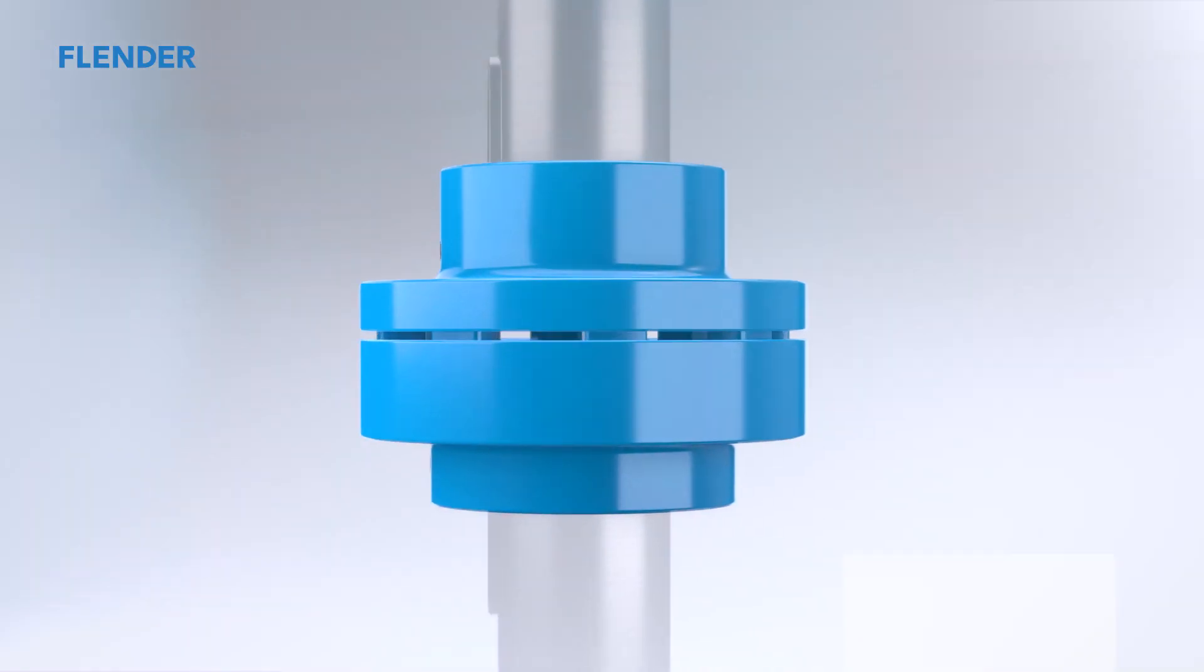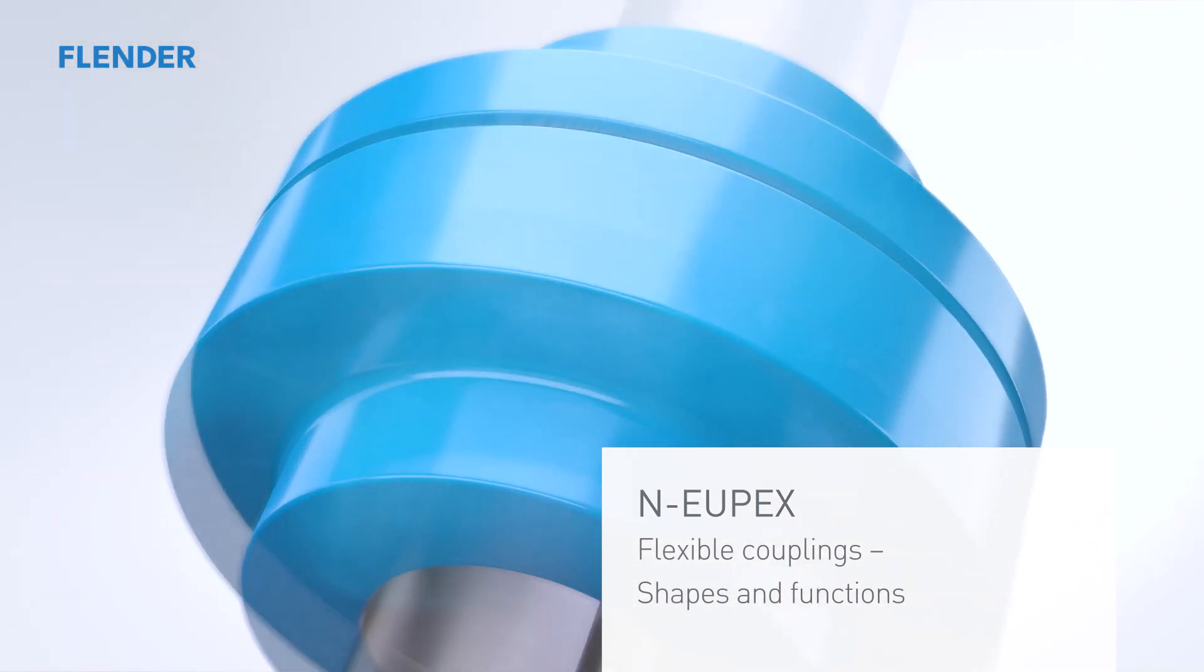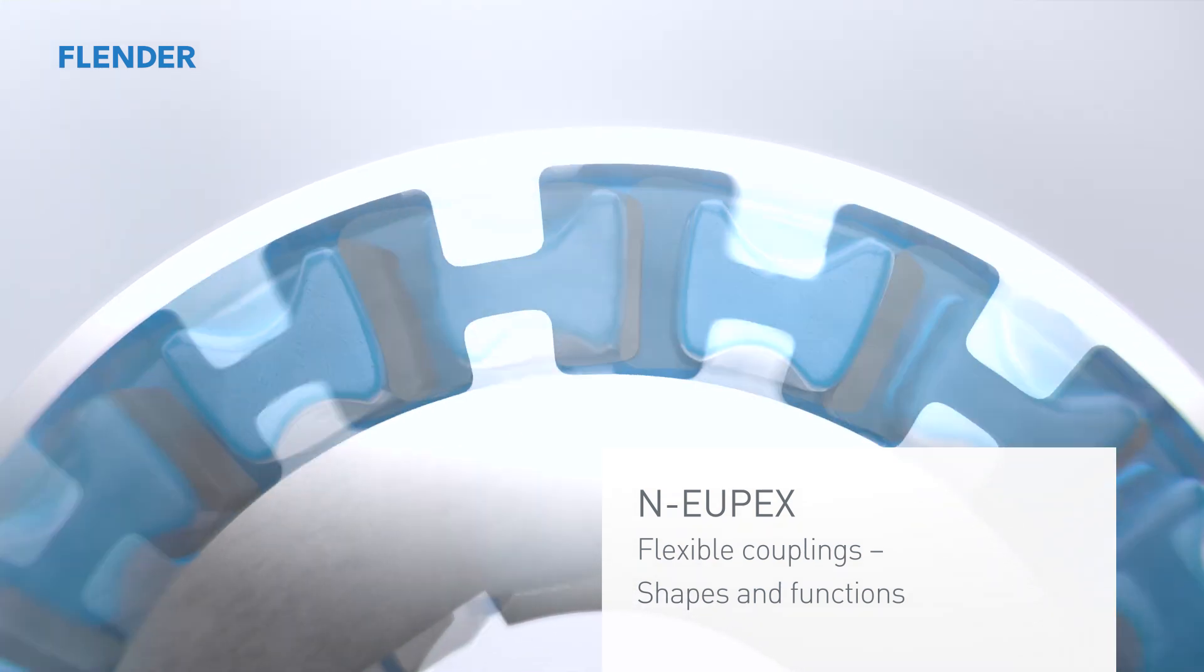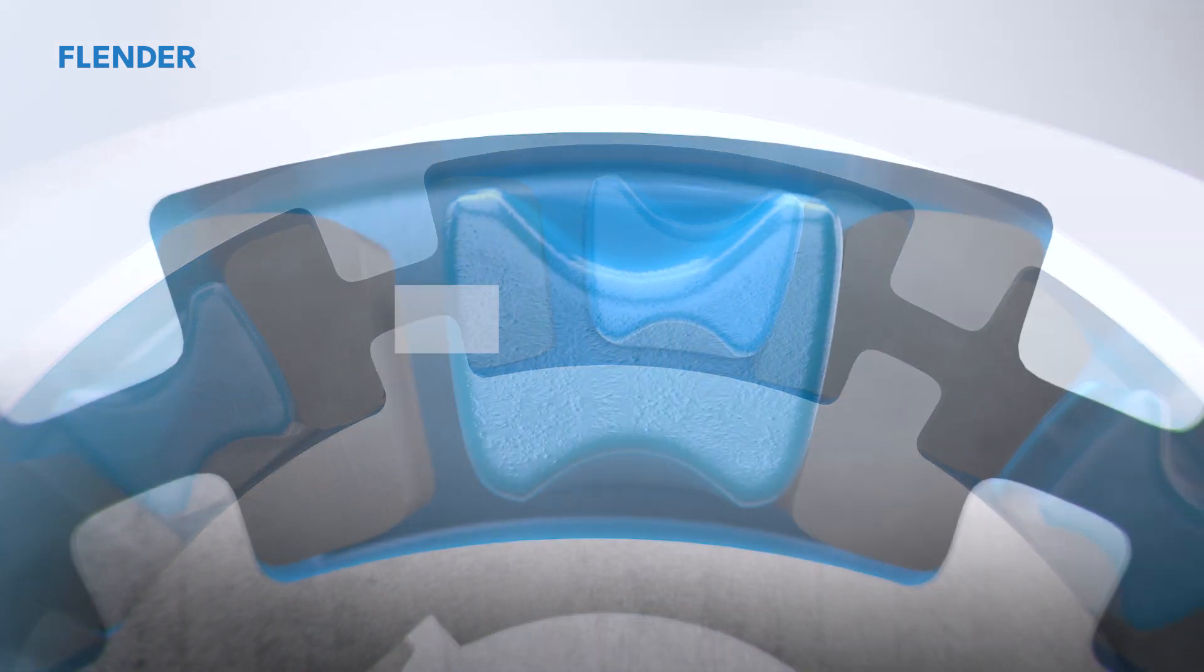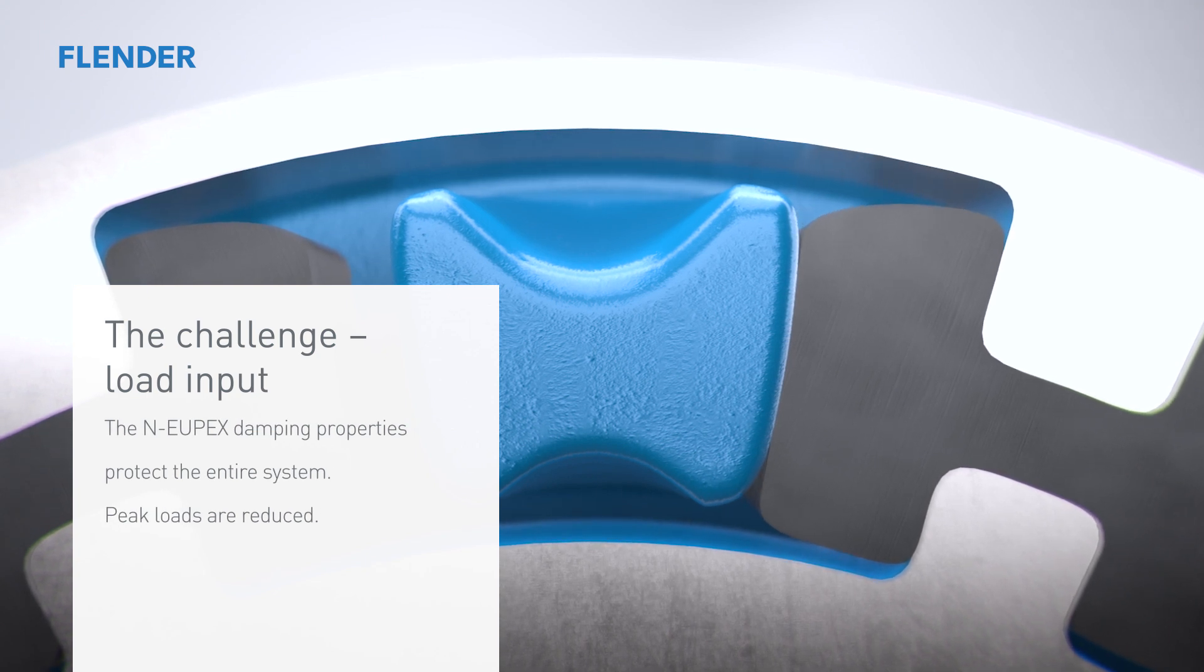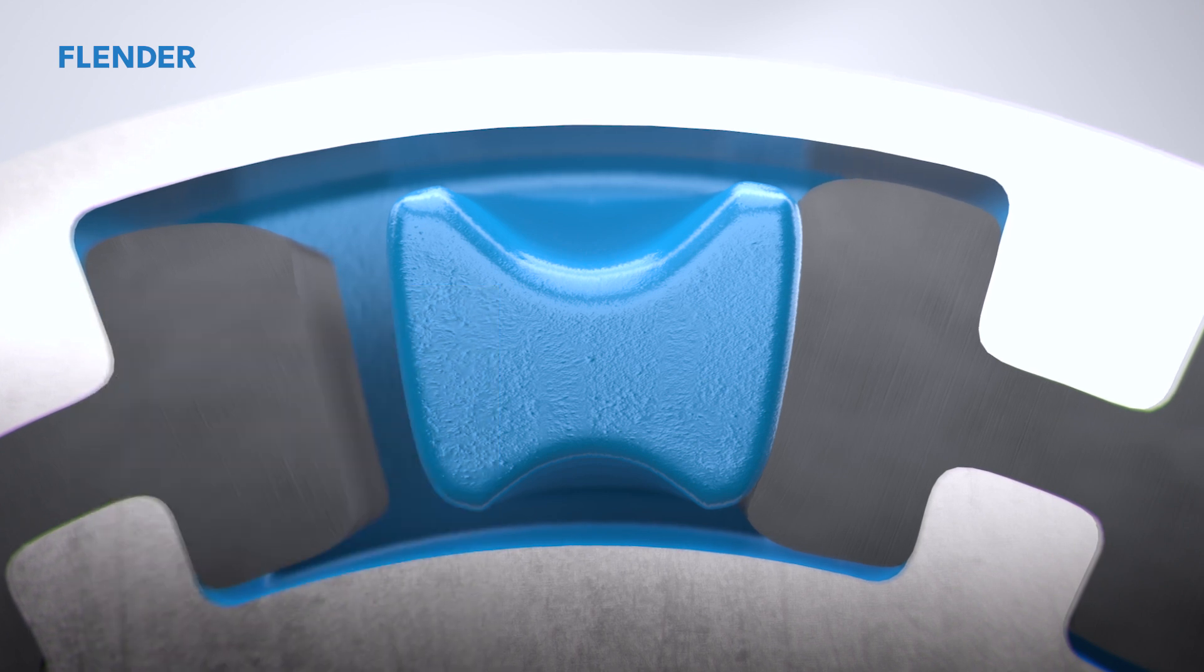The NOIPEX effortlessly absorbs the given mechanical loads, protecting the motor, gear unit and working machine. This applies especially during startup, stopping or switching gears. The NOIPEX reduces peak loads and protects the entire system from damage.